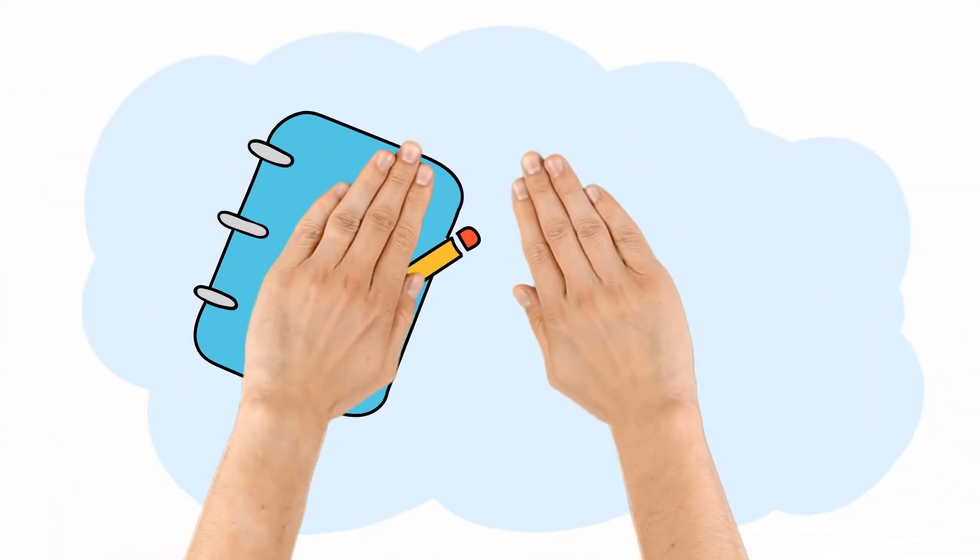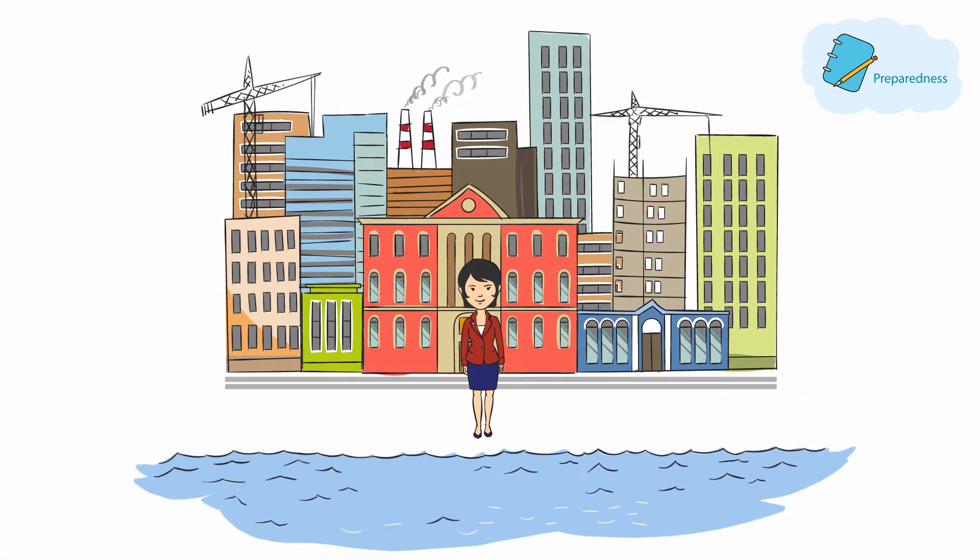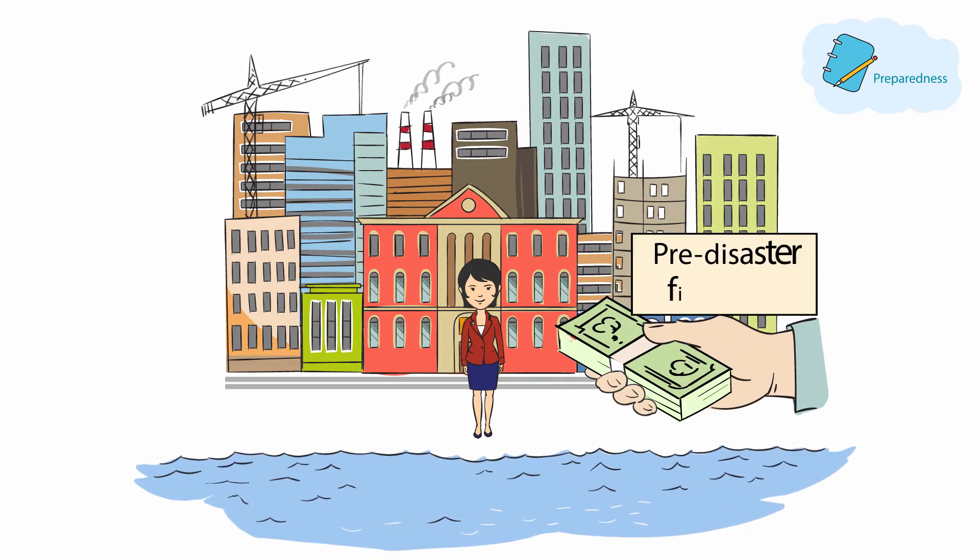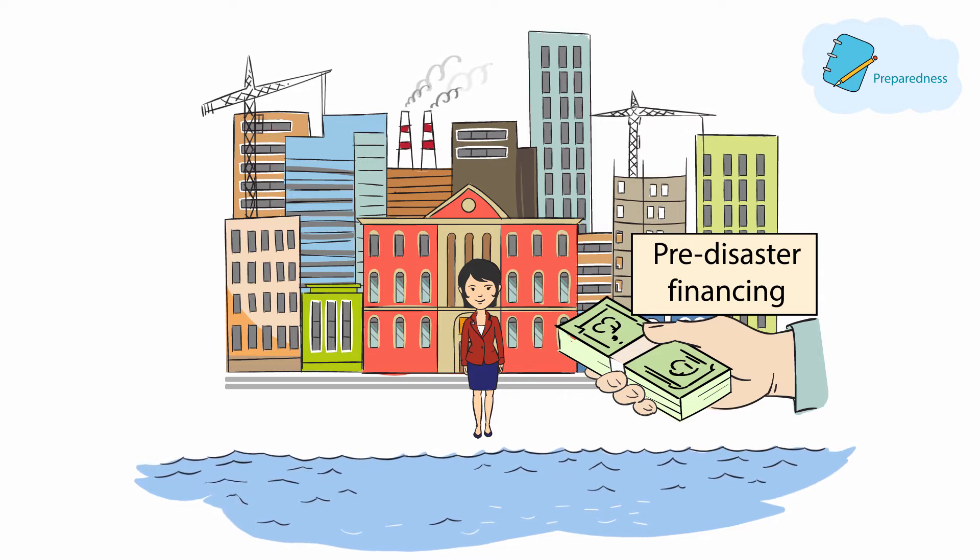3. Preparedness. As the name suggests, Emma must prepare for floods. As mayor, Emma can take out pre-disaster financing, that is, financing before a hazard strikes, to ensure that funding will be available immediately after a heavy rainfall.